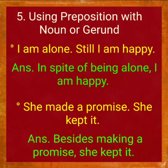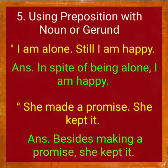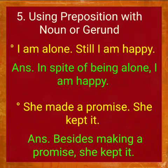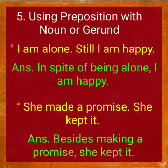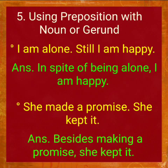Number five method: using preposition with a noun or gerund. Gerund means a verbal noun — that is, the present form of a verb plus -ing, which is used as a noun. Example: 'I am alone. Still I am happy.' The answer: 'In spite of being alone, I am happy.' Here, 'in spite of' is a prepositional phrase and 'being' is used as a gerund. The main verb is 'am.'